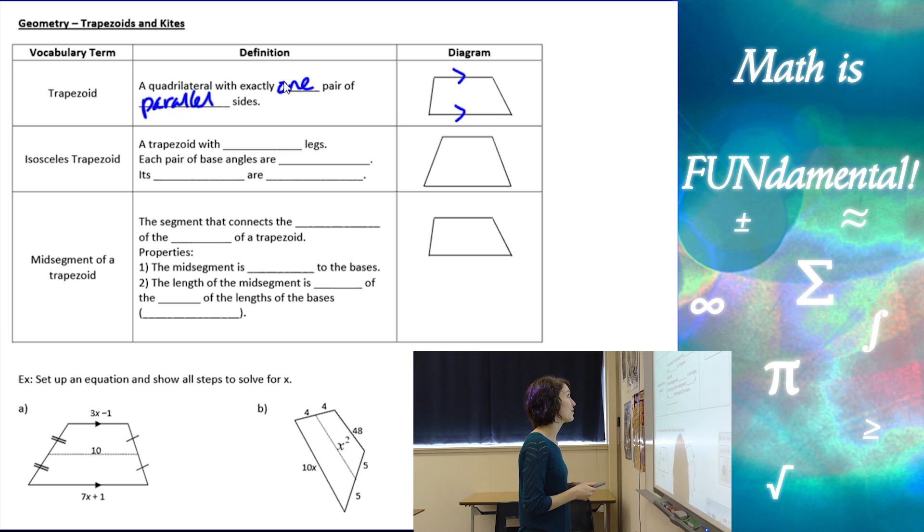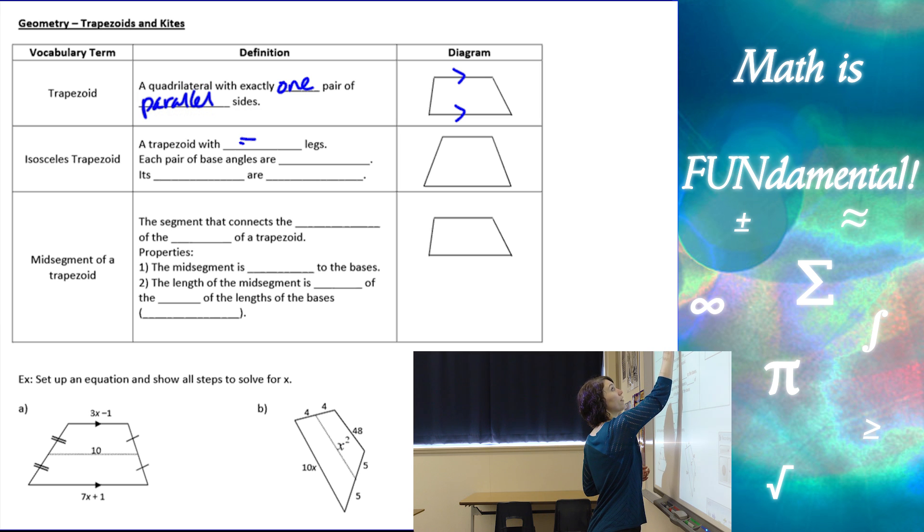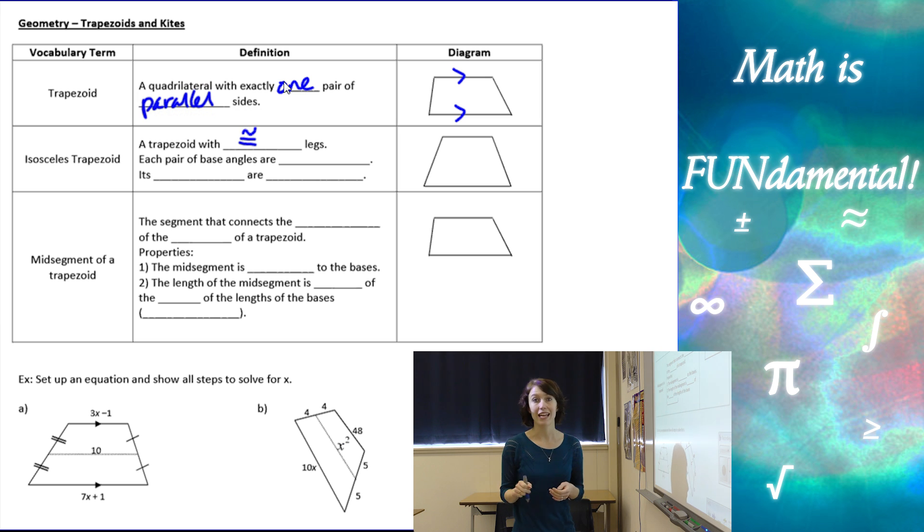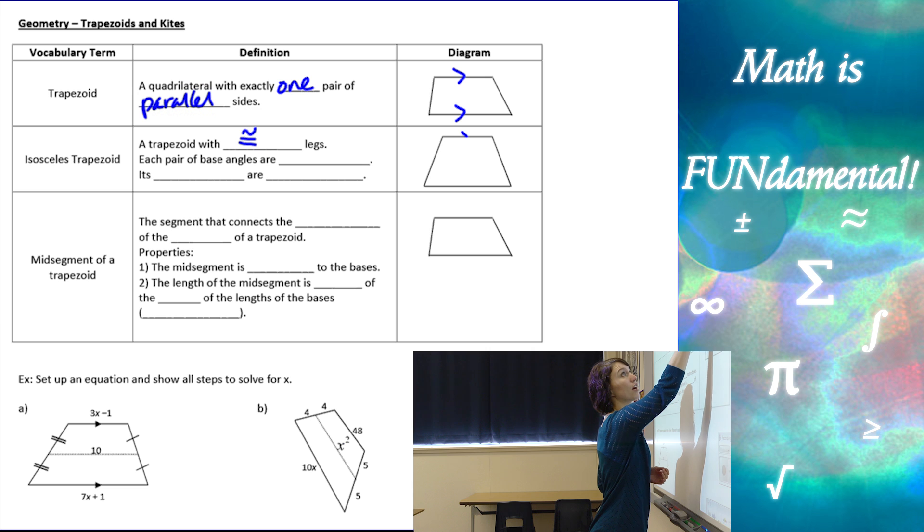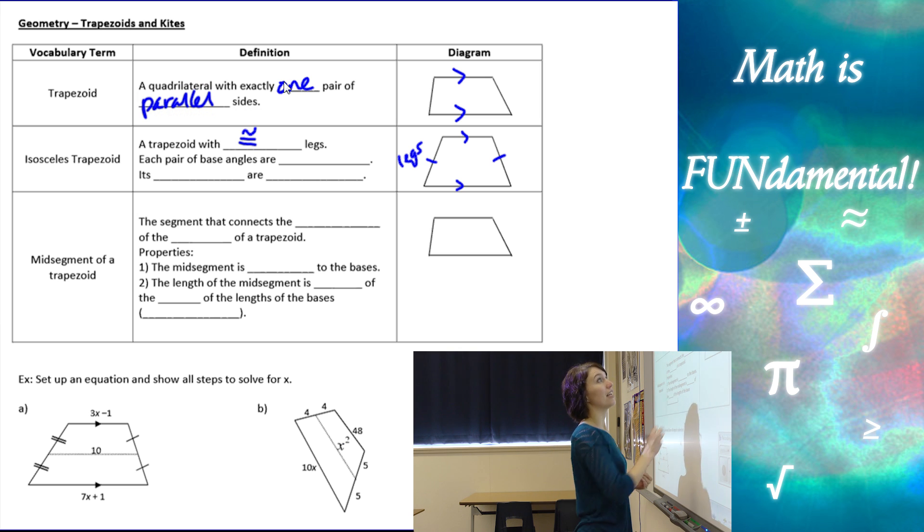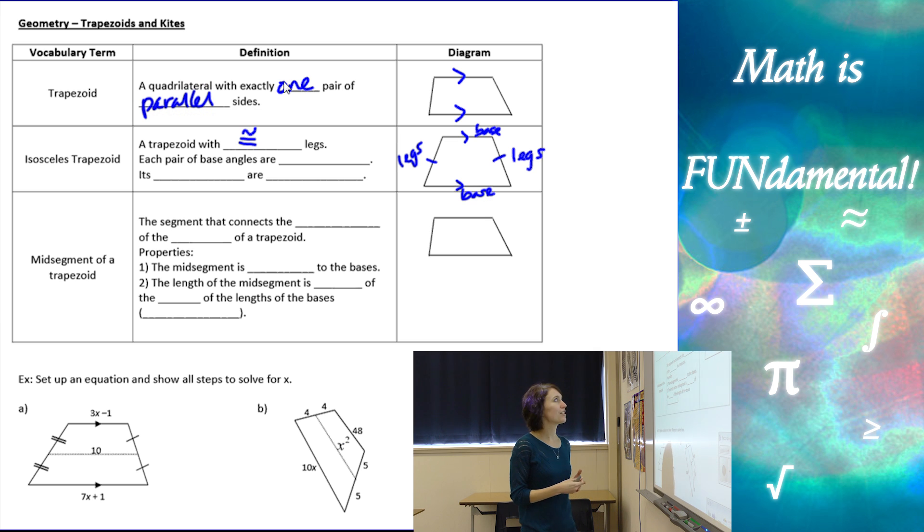An isosceles trapezoid is a trapezoid with congruent legs. So here is our parallel sides and the two sides that are not parallel are the legs. We call those the legs and those are congruent. The two parallel sides are what we call the bases.